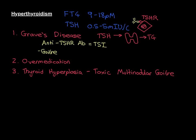Toxic multinodular goitre literally means that for some reason the individual's thyroid gland has grown too big all over — they've ended up with a goitre that is productive, producing a huge amount of thyroxine. The term 'toxic' is used because it can have a hyperthyroid effect, which can be very dangerous. Hyperthyroidism also has another name: thyrotoxicosis. That's why we have the word 'toxic' here — because a toxic multinodular goitre is capable of producing thyrotoxicosis.